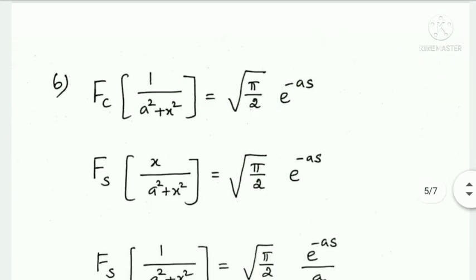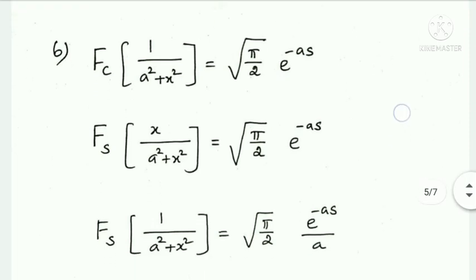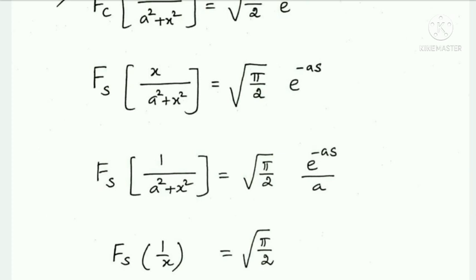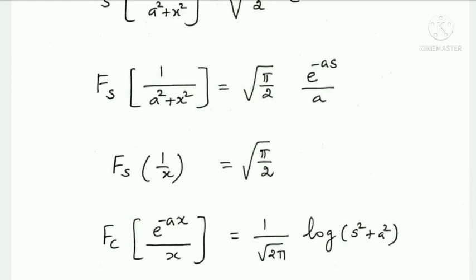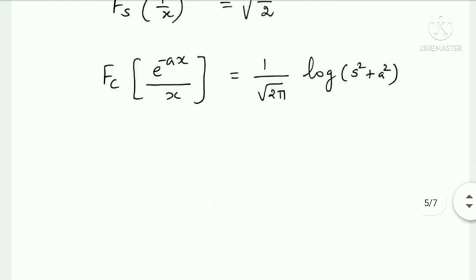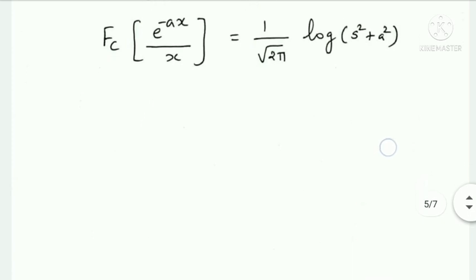Fourier cosine transform of 1/(a²+x²) equals √(π/2) times e^(−as). Fourier sine transform of x/(a²+x²) equals √(π/2) times e^(−as). Fourier sine transform of 1/(a²+x²) equals √(π/2) times e^(−as)/a. Fourier sine transform of 1/x equals √(π/2). Fourier cosine transform of e^(−ax)/x equals (1/√π) times log(s²+a²).